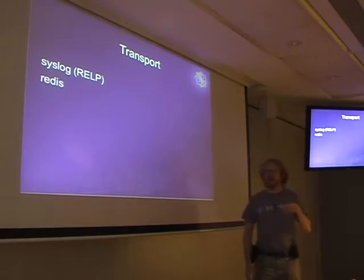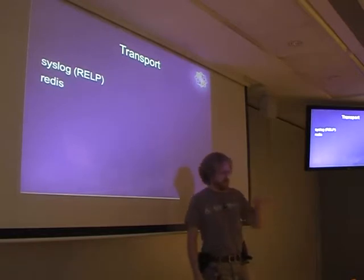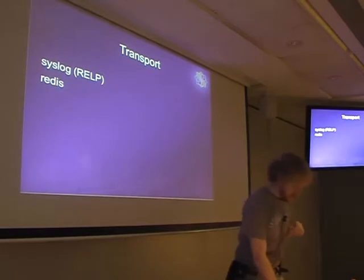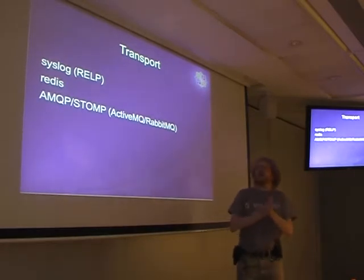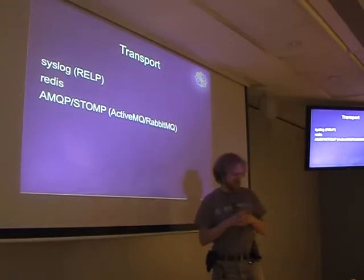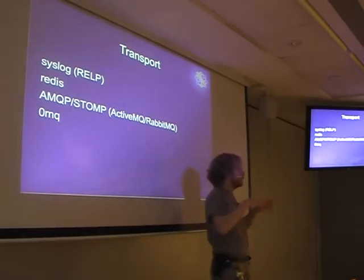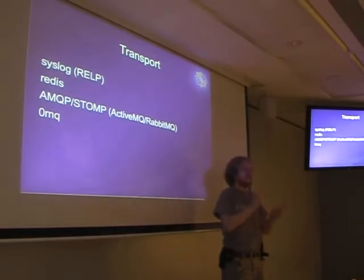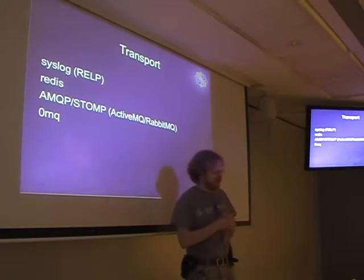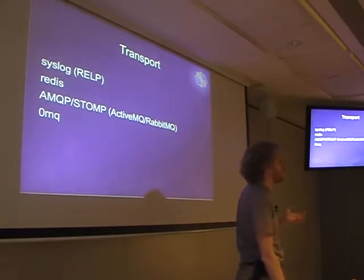Another commonly documented transport is Redis, which is easy to set up and is used here as a pub/sub mechanism. For a real publish-subscribe mechanism you'd use AMQP or STOMP — ActiveMQ, RabbitMQ, and similar. You also see ZeroMQ frequently: unlike AMQP/STOMP, ZeroMQ is a library so components communicate directly without a dedicated broker. The problem with ZeroMQ is no encryption, which matters since log messages typically contain sensitive data.